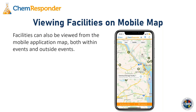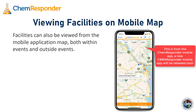We'll now talk about viewing facilities on the mobile application map. Facilities can be viewed from the ChemResponder mobile application map both within events and outside of events. The ChemResponder mobile application is available in the iOS App Store, and also for Android and Windows — it's free and available in the store.